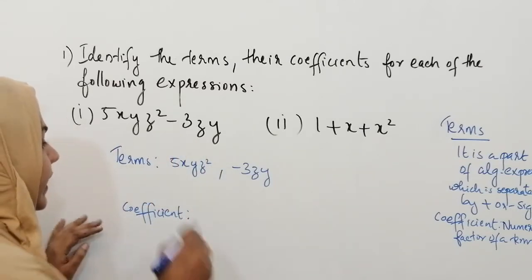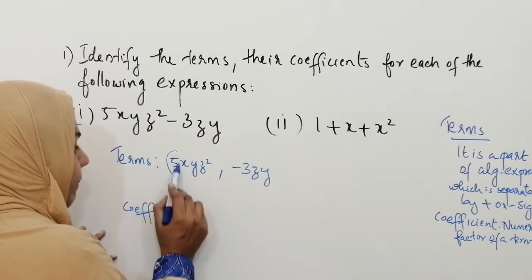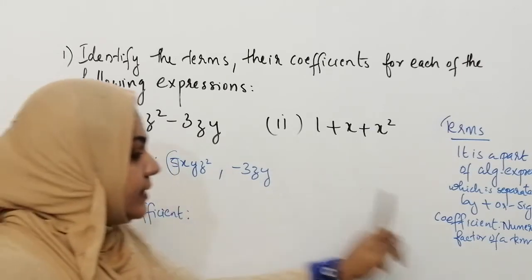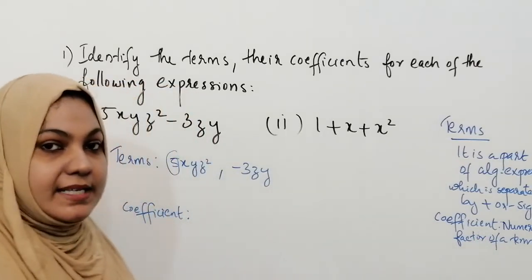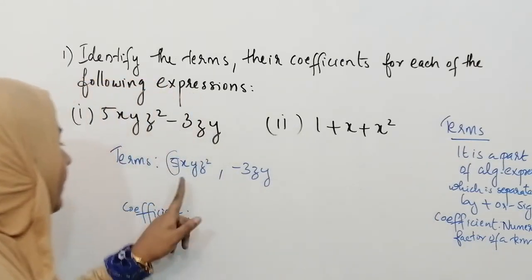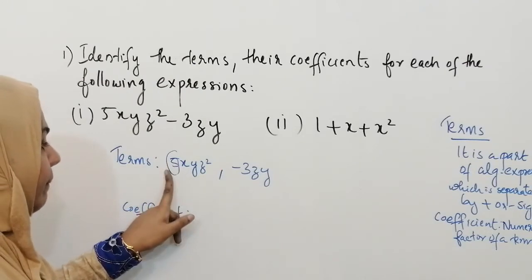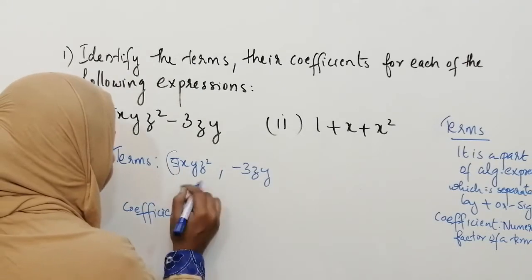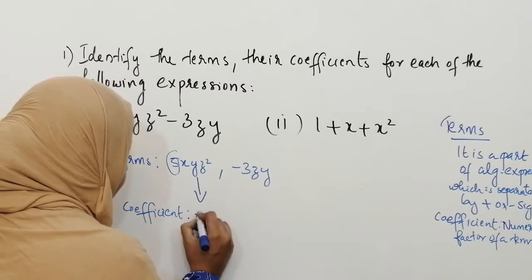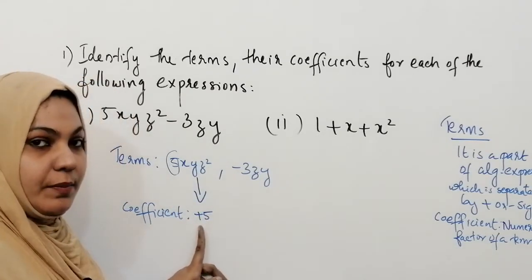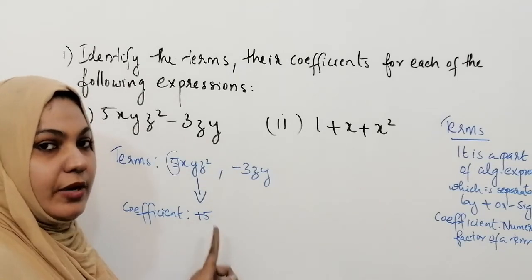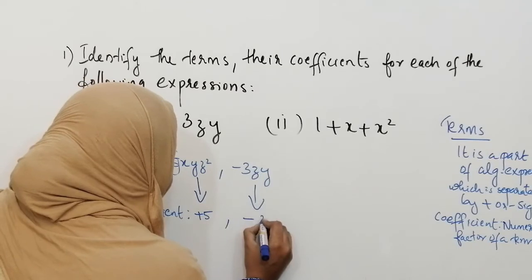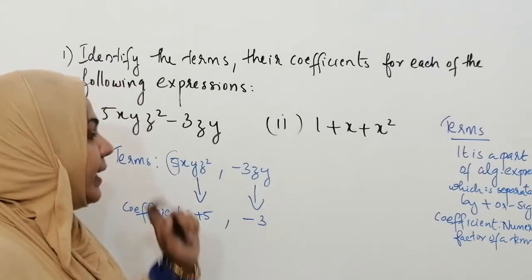Next we can write what is the coefficient. The number multiplied by the variable is called the coefficient, or we can say numerical factor of a term — that is, the number of a term. So what is the number here? The number multiplied by the variable is 5, so the coefficient of the first term is 5. For positive terms you do not need to mention the positive sign; only for negative terms you must mention the negative sign. So in this expression, minus 3 is the coefficient of minus 3zy.